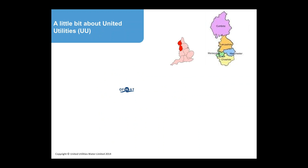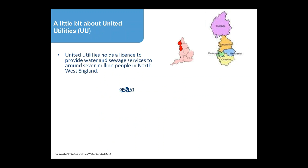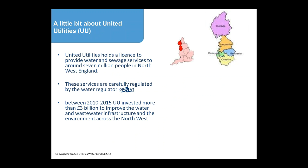A little bit about United Utilities. There's a little map on your screen that shows where we are. We hold the license to provide water and wastewater services to about 7 million people in the northwest of England. These services are very carefully regulated by the water regulator, Ofwat. Between 2010 and 2015, we invested almost 3 billion pounds worth of customers' money to improve water and wastewater infrastructure in the northwest.